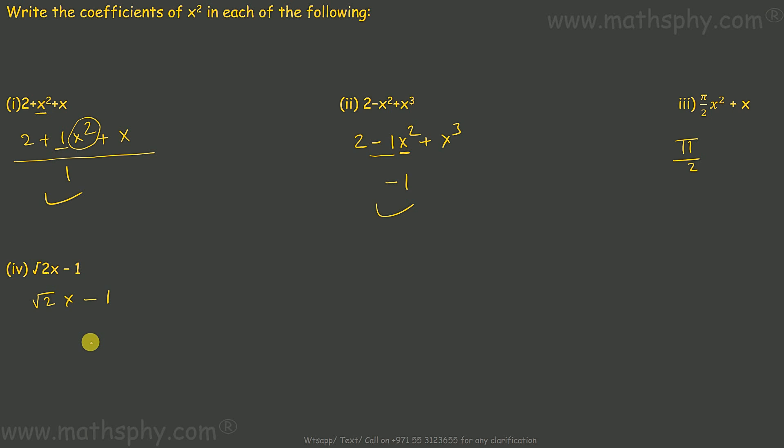Any term or any number, any variable multiplied by 0 gives you 0, and 0 added to any expression, any variable, any number does not have any impact. So if I add 0x², 0 into x² gives you 0.